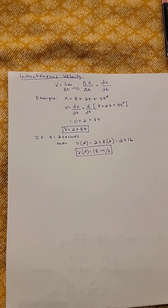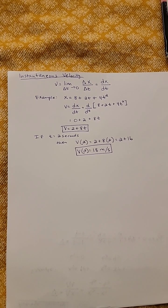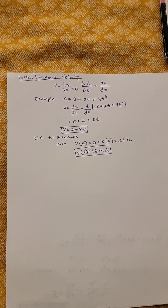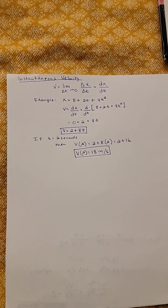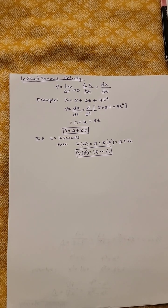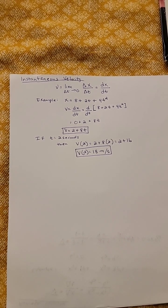So when t is 2 seconds, velocity is equal to 18 meters per second or 18 feet per second, depending on what your displacement unit is.